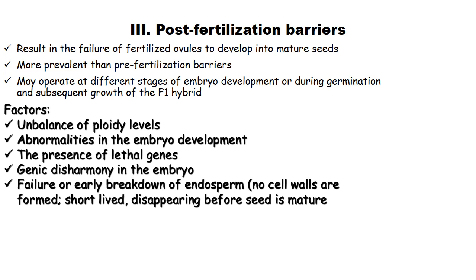The third major problem in distant hybridization is post-fertilization barriers, resulting in failure of the fertilized ovule to develop into mature seeds. More prevalent than pre-fertilization barriers, they may operate at different stages of embryo development or during germination and subsequent growth of F1 hybrid. Factors responsible include: unbalanced ploidy level, abnormalities in embryo development, presence of lethal genes, genic disharmony in embryo, and failure or early breakdown of endosperm.